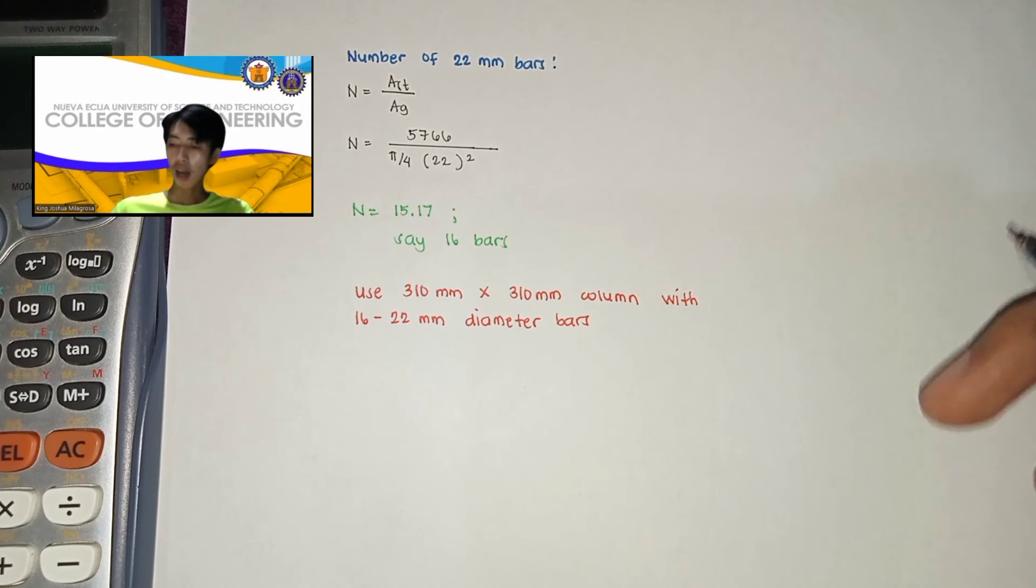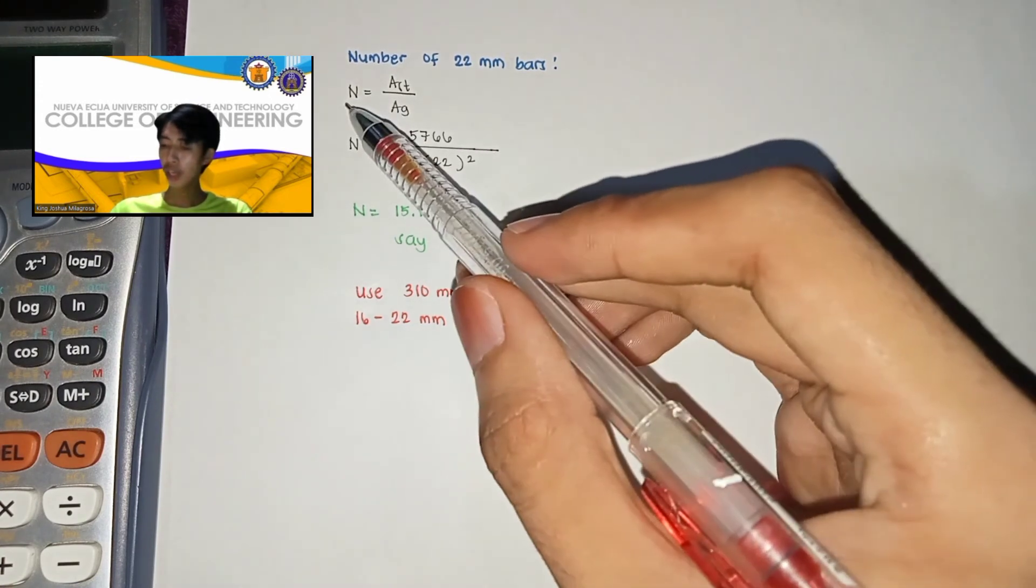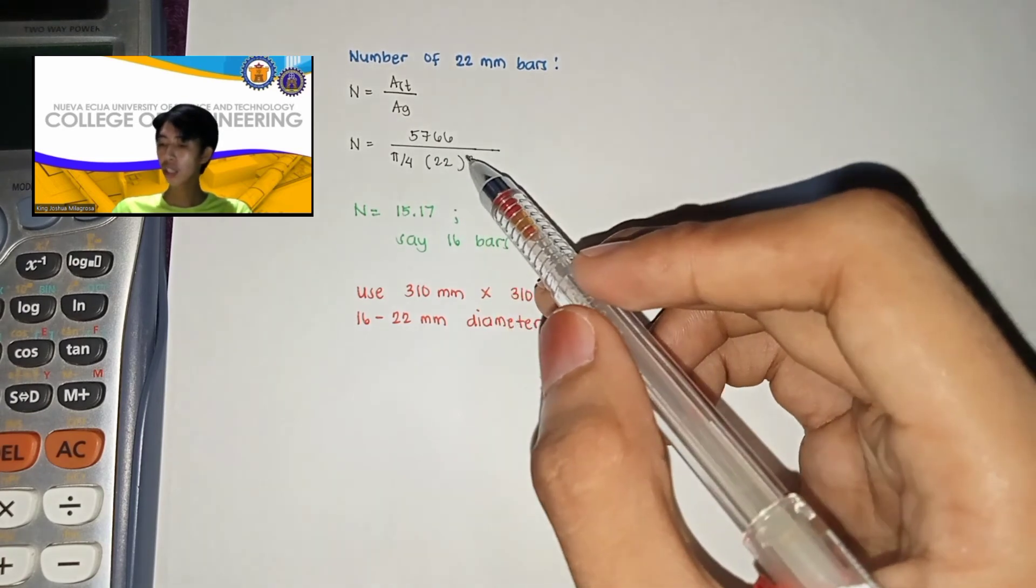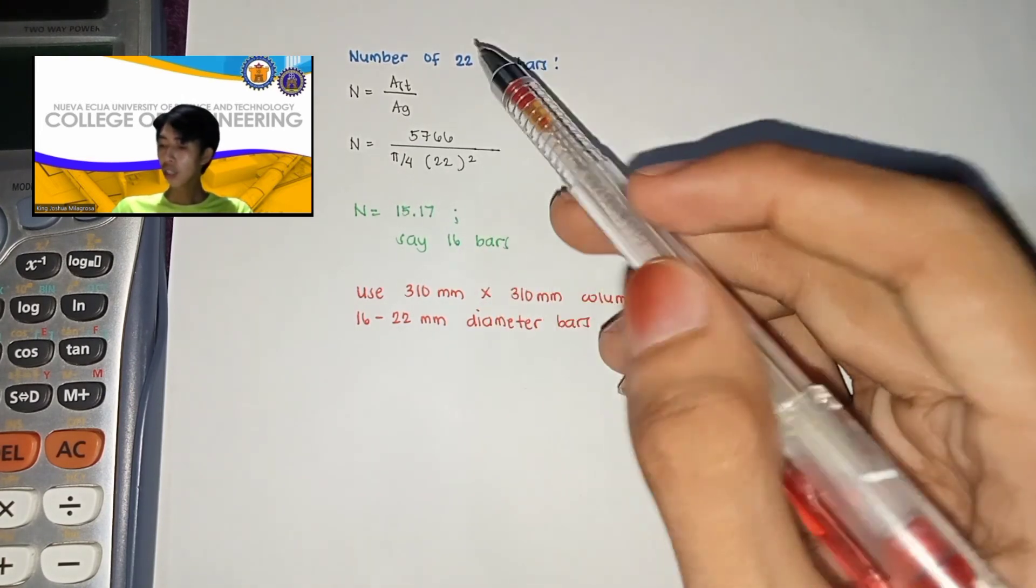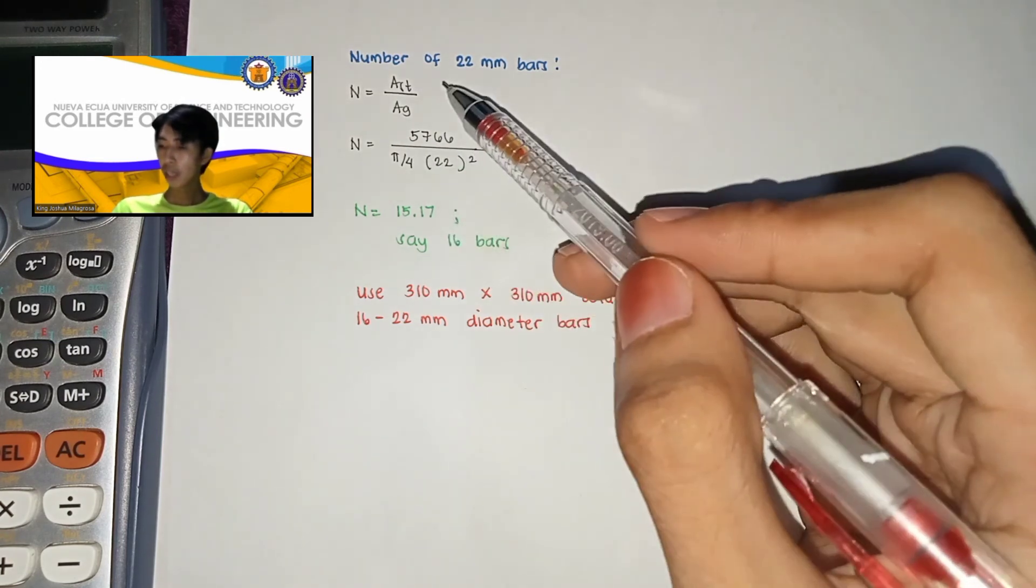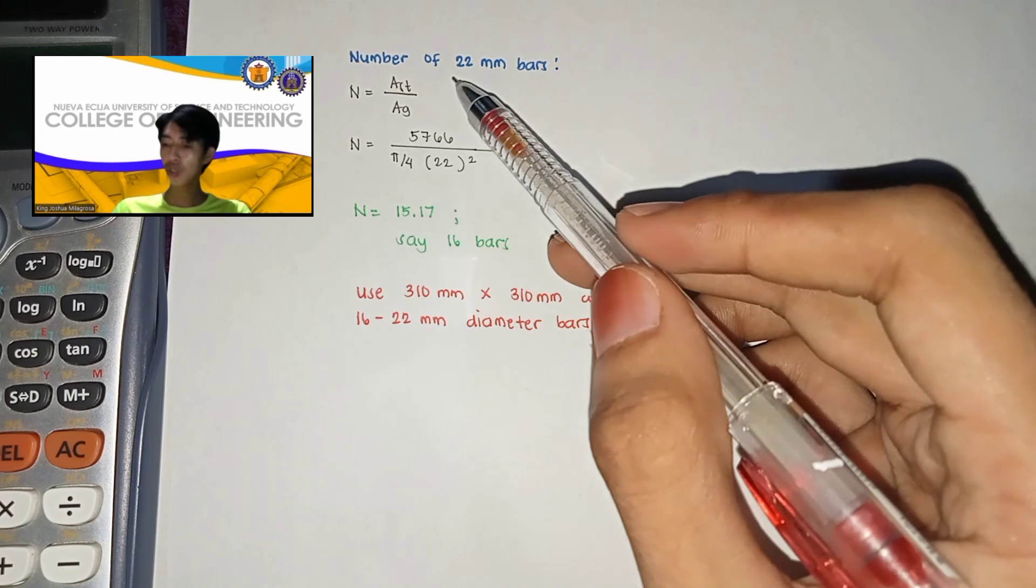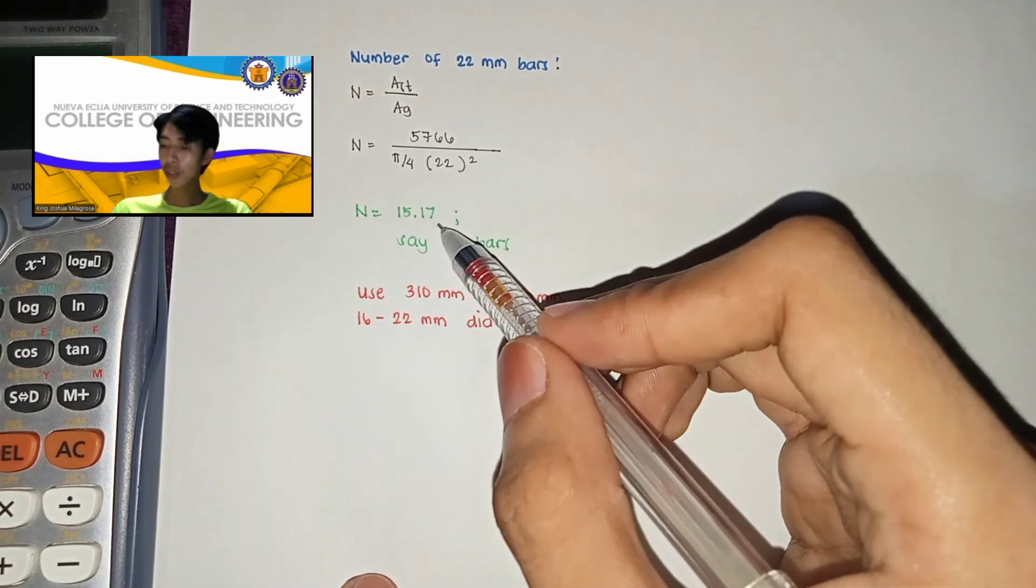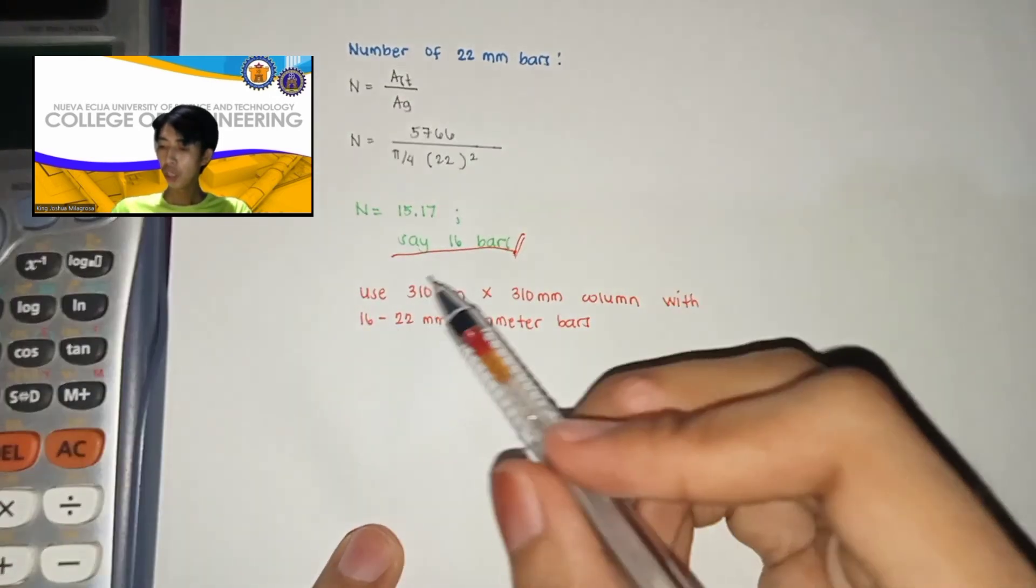Punta naman tayo dito sa number of 22 mm bars. So using N is equal to AST over AD which is yung N natin is yung number ng bars natin. So equal yan sa nakompute natin kanina na AST which is 5,766 divided by 5 over 4D squared, or 5 over 4 multiplied by 22 since 22 yung gagamitin natin. So kanina kung napansin nyo nasolve na natin sa AD pero hindi natin siya gagamitin kasi nagbigay ng diameter ng main bar na gagamitin natin which is yung 22 mm. So yun yung gagamitin natin. So bali ang makukuha natin sagot dyan is equal to 15.7 or say we will be using 16 pieces ng main bars.